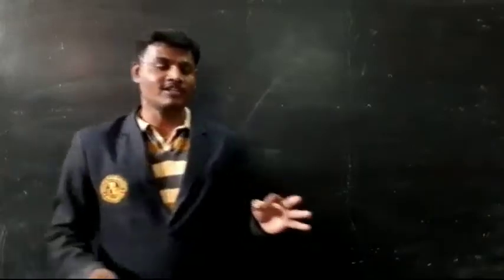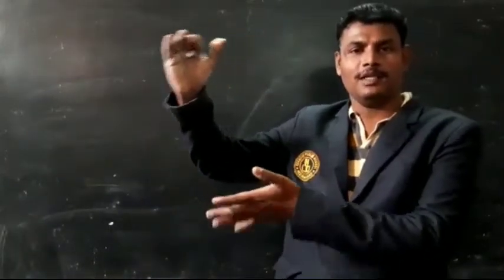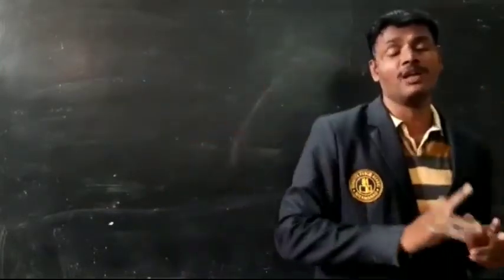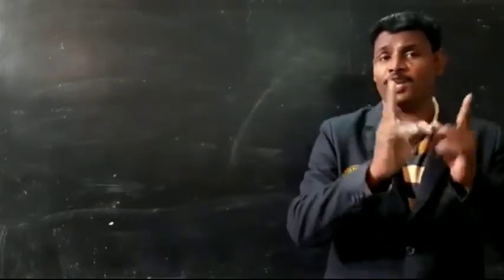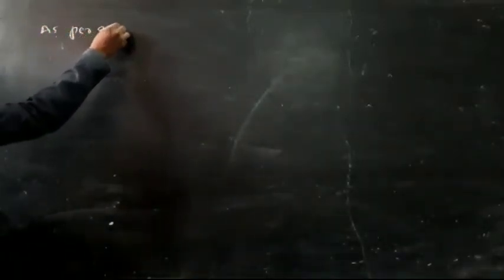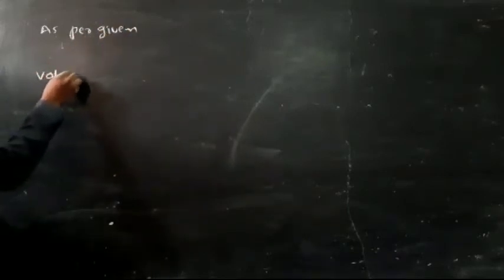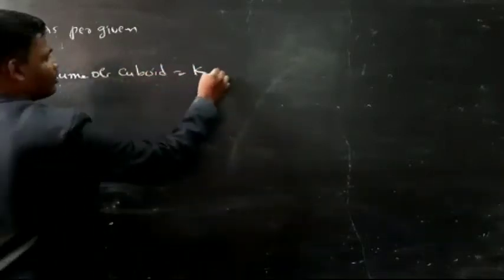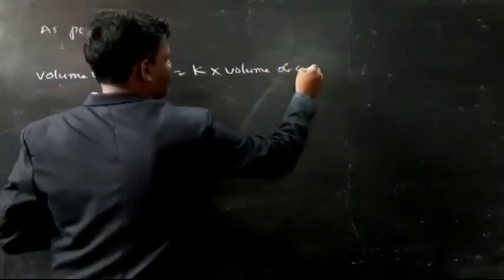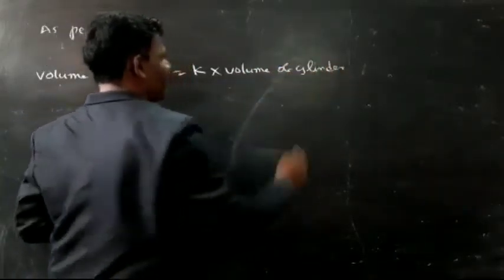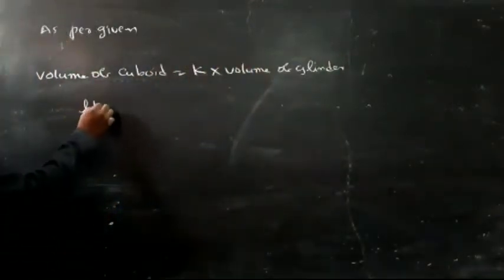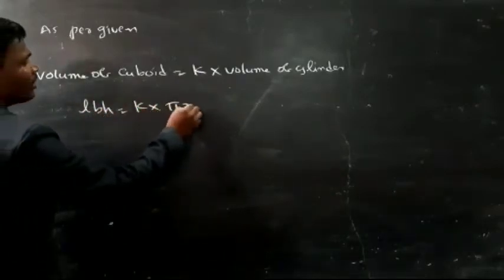The conversion here is from the cuboid to cylindrical candles. Before the conversion and after the conversion, the volume remains the same. So the volume of the cuboid is equal to k into the volume of the cylinder. The formula for the cuboid is L × B × H, which equals k into π R² H.